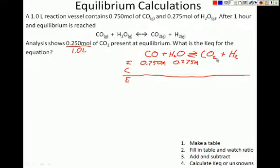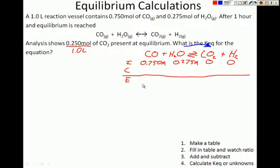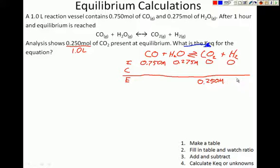At the beginning, our CO₂ concentration is 0, and our hydrogen gas concentration is 0. Since products are at zero, our reaction is going to shift to the right. At equilibrium, we have a CO₂ concentration of 0.250 M. Since it's a 1:1:1:1 ratio, hydrogen gas is also going to increase by the same amount — 0.250 M.